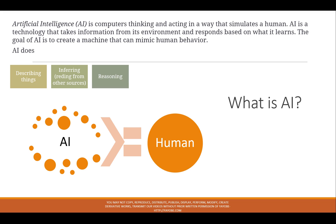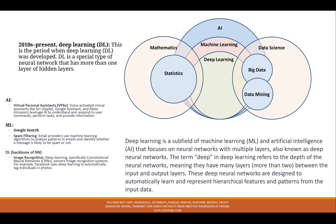Therefore, when you say artificial intelligence, it is a mechanism by which we can make a machine act like human beings. It involves automation and science, using statistics and mathematics. Data is important.